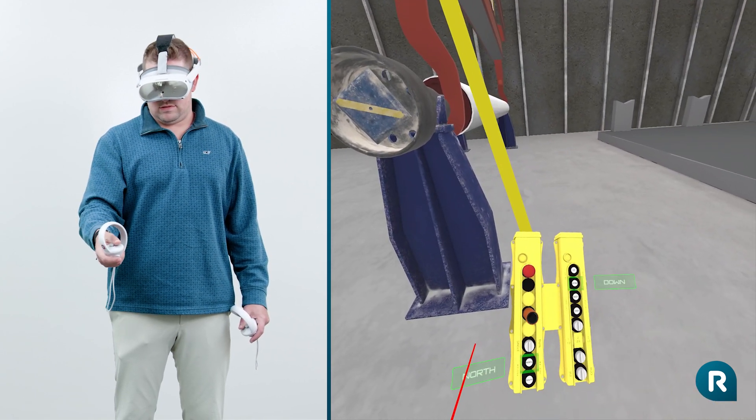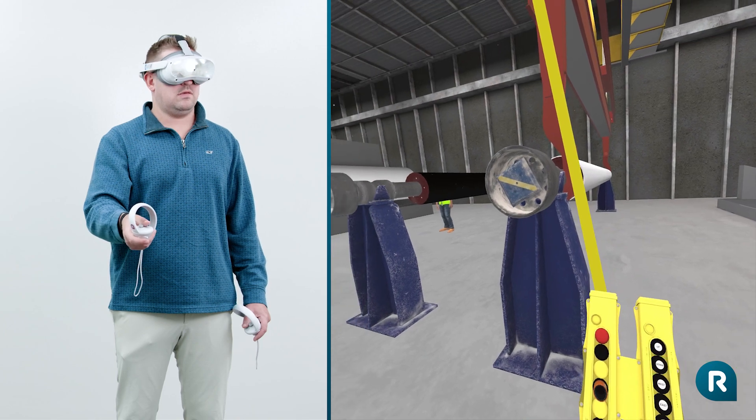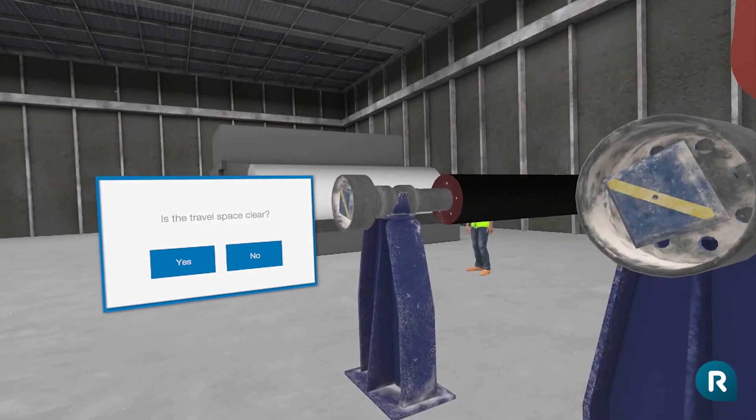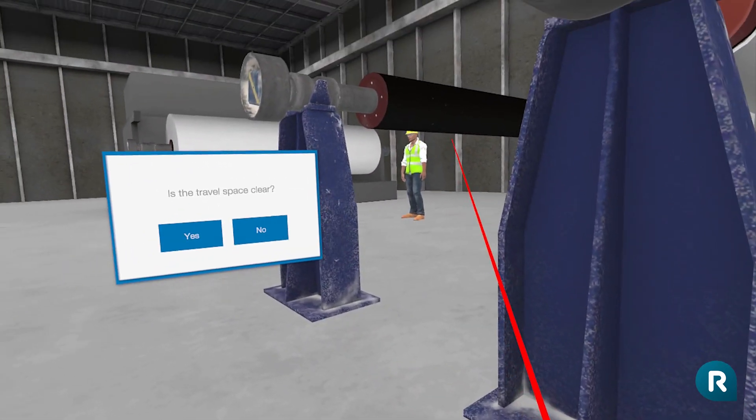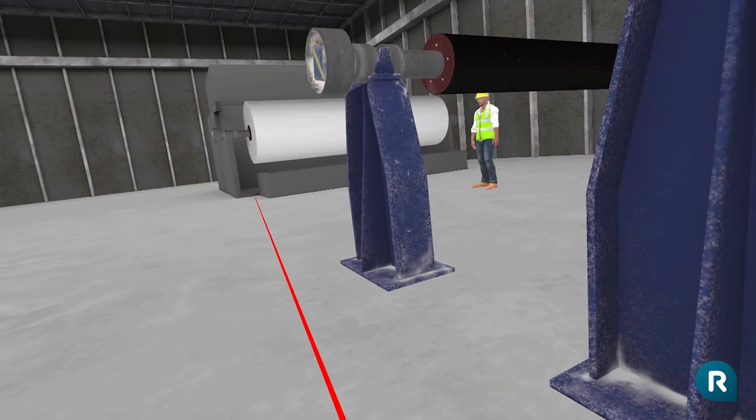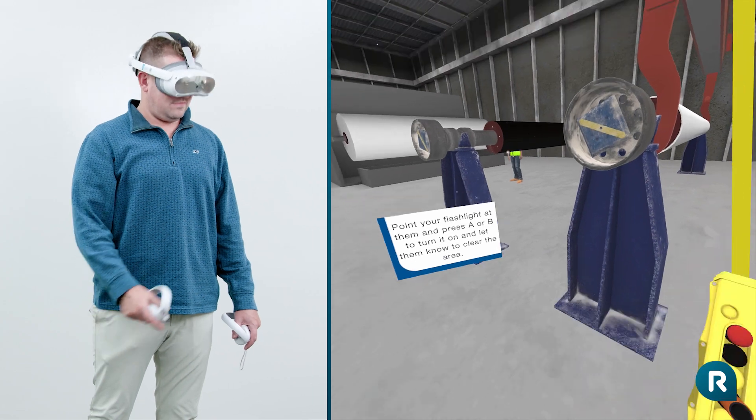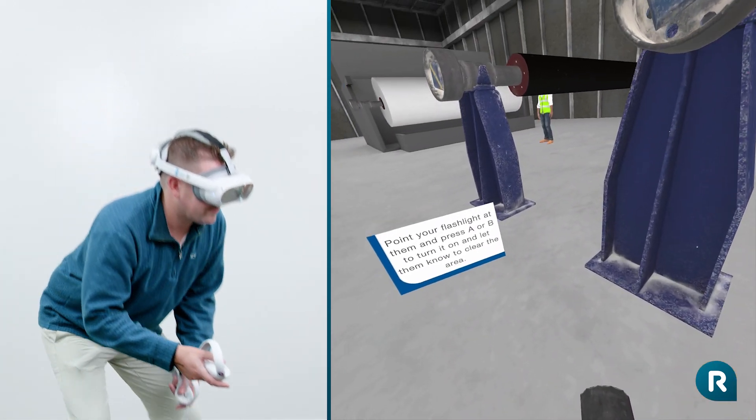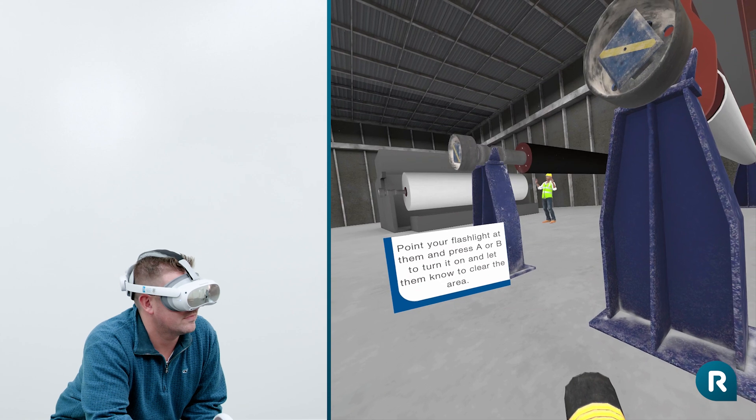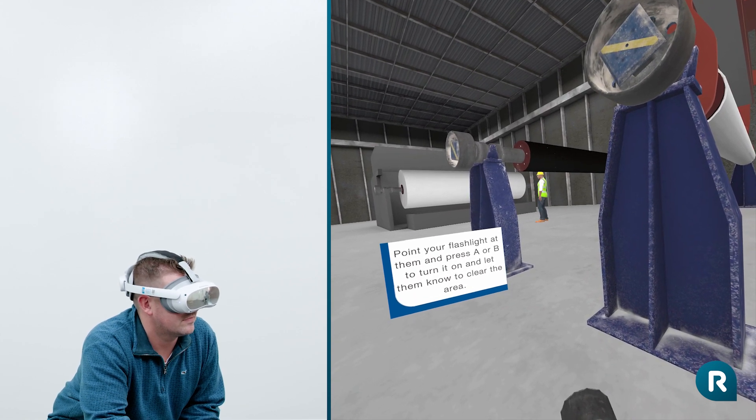Before we move on to the next roll, can you make sure the travel space is clear? Looks like there's someone in the way. Using your flashlight, get the attention of the person in the travel space to let them know to clear the area. Press A or B to turn on the flashlight.